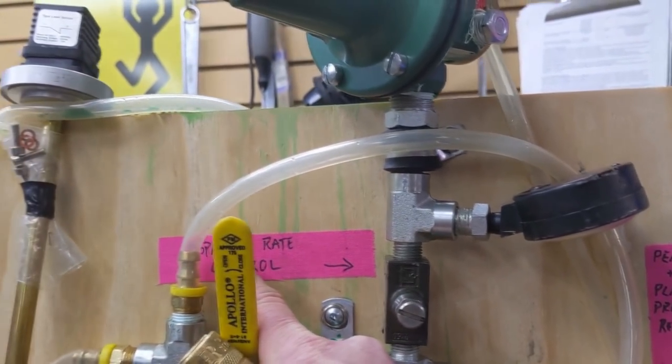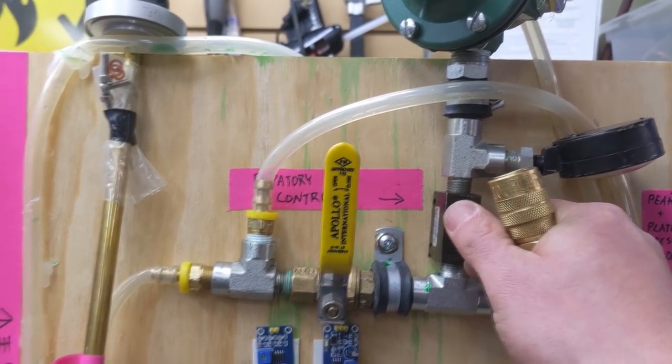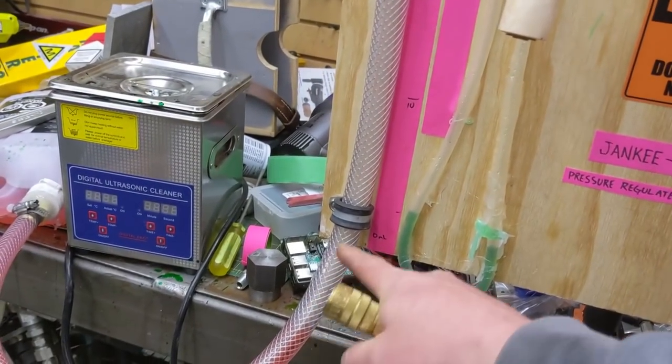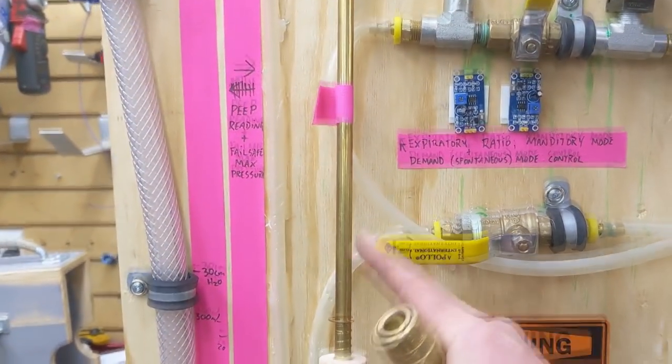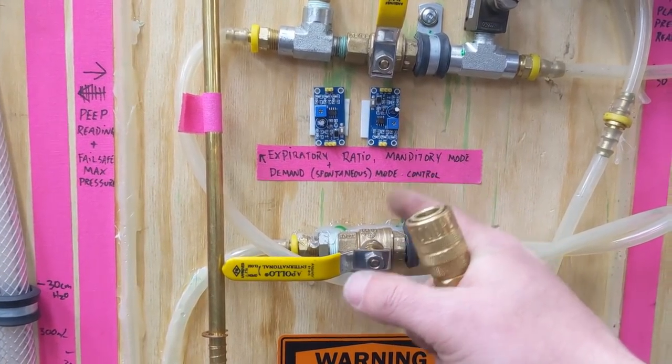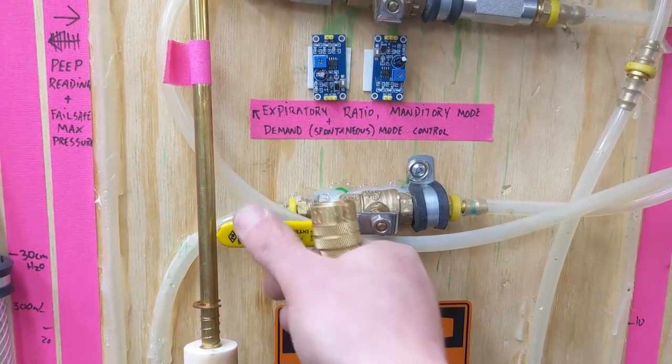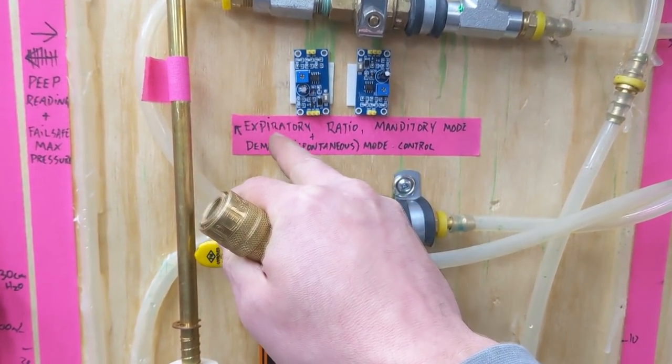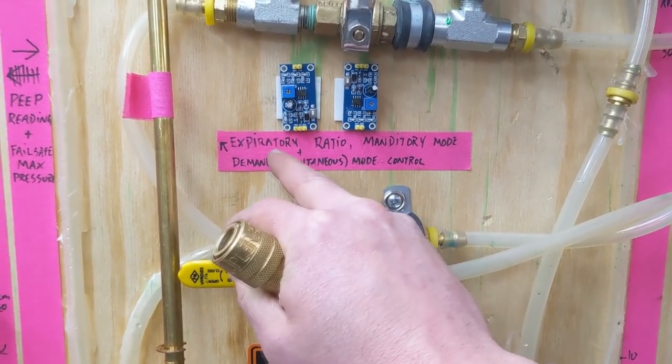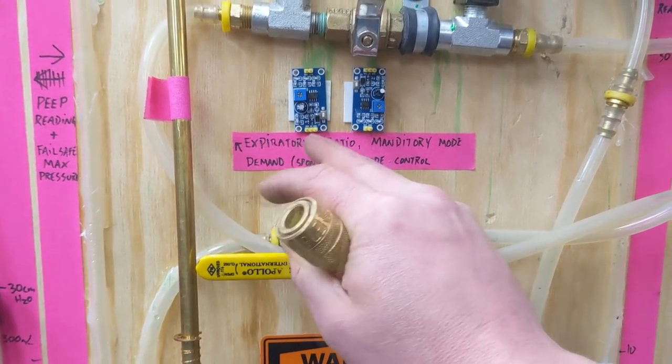This is the respiration rate control. This is just a needle valve. And what that does is it fills that bladder up, which brings this guy up, which triggers the float switch, which triggers the 555 timer, which fires the solenoids. And what we can do is these triple nickels control the ER. That is, you're supposed to exhale for longer than you inhale. So we can set all that up. The requirement, according to the UK document there, was between one to one and one to three. And we can do that.